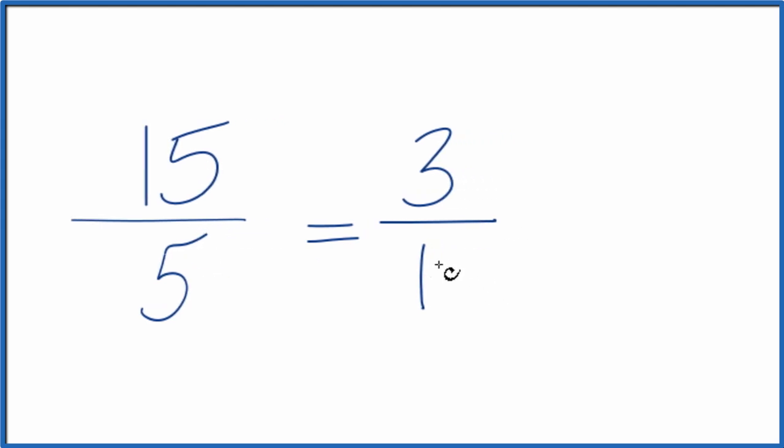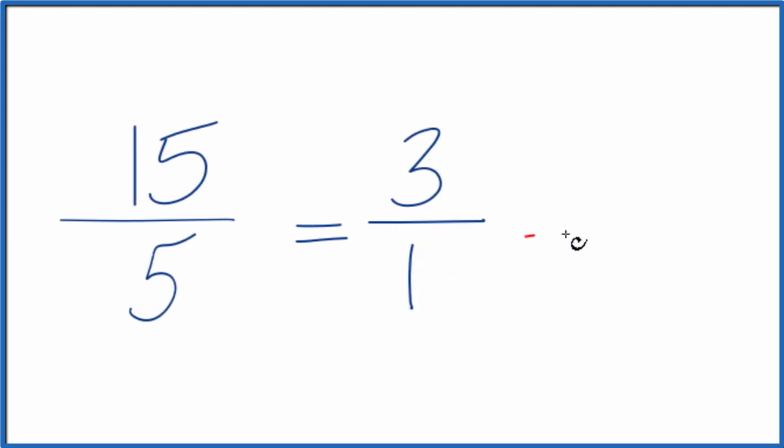And 3 over 1, that's the same as dividing 3 by 1. That just gives us 3. So we could write the whole number 3.